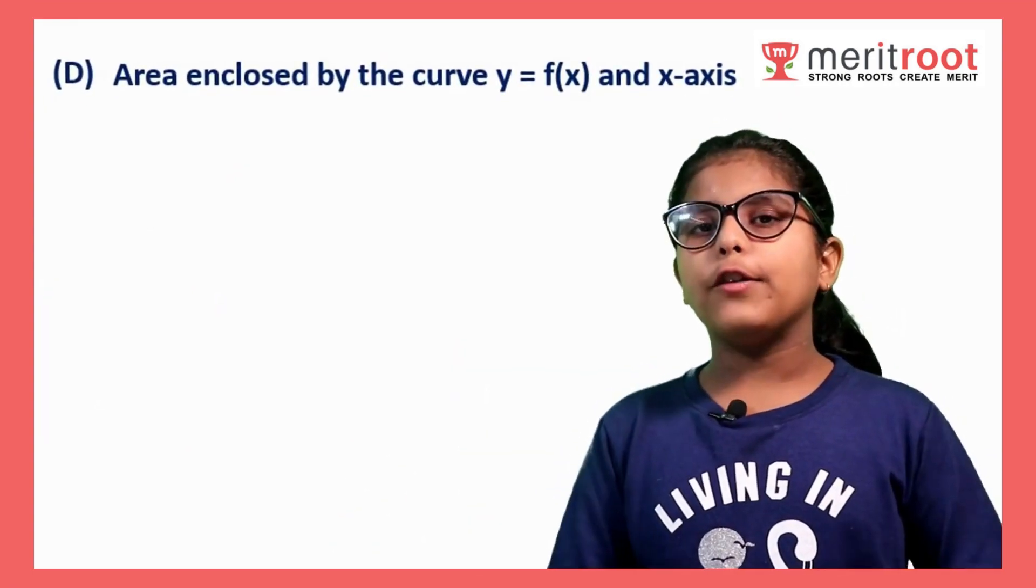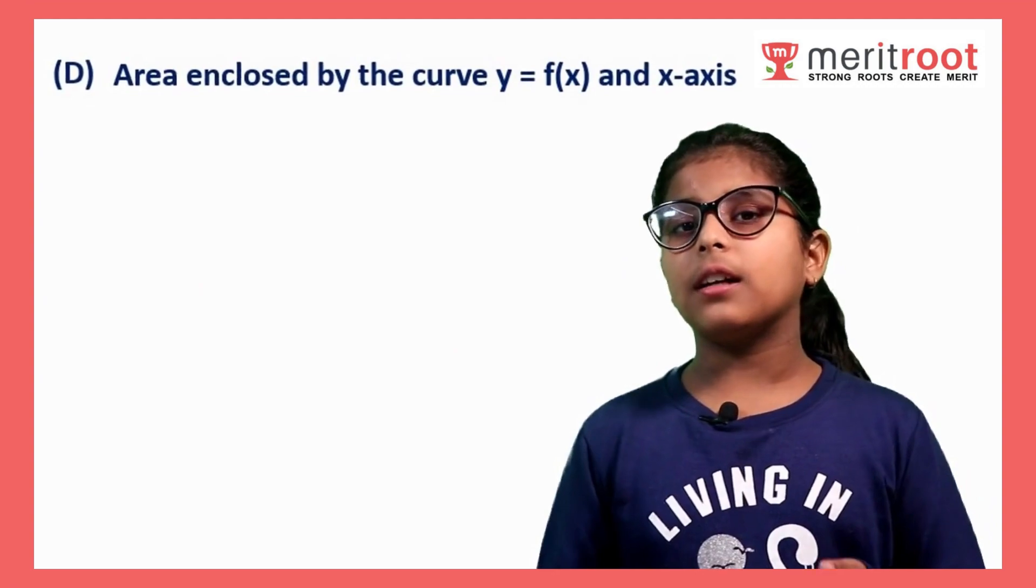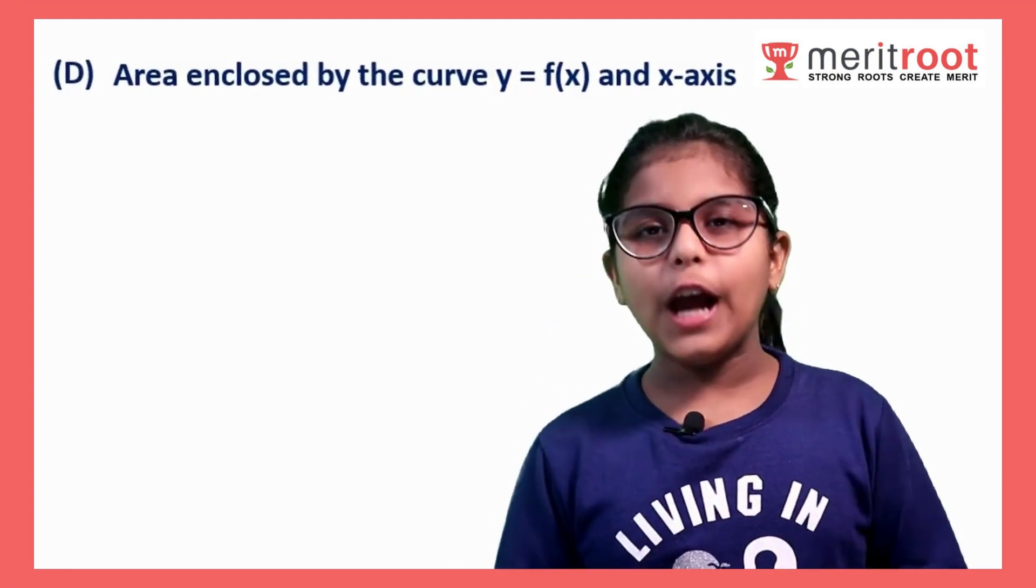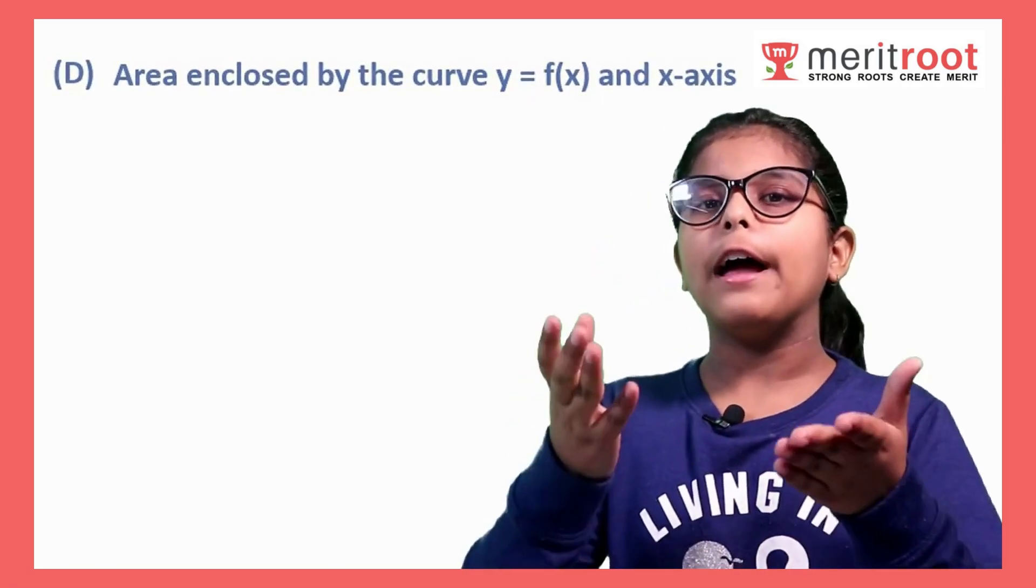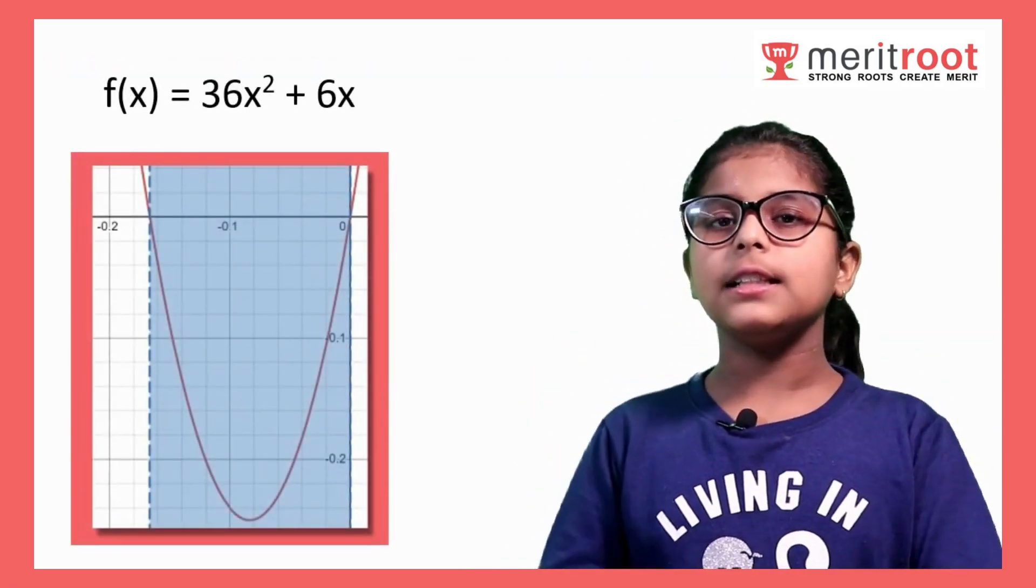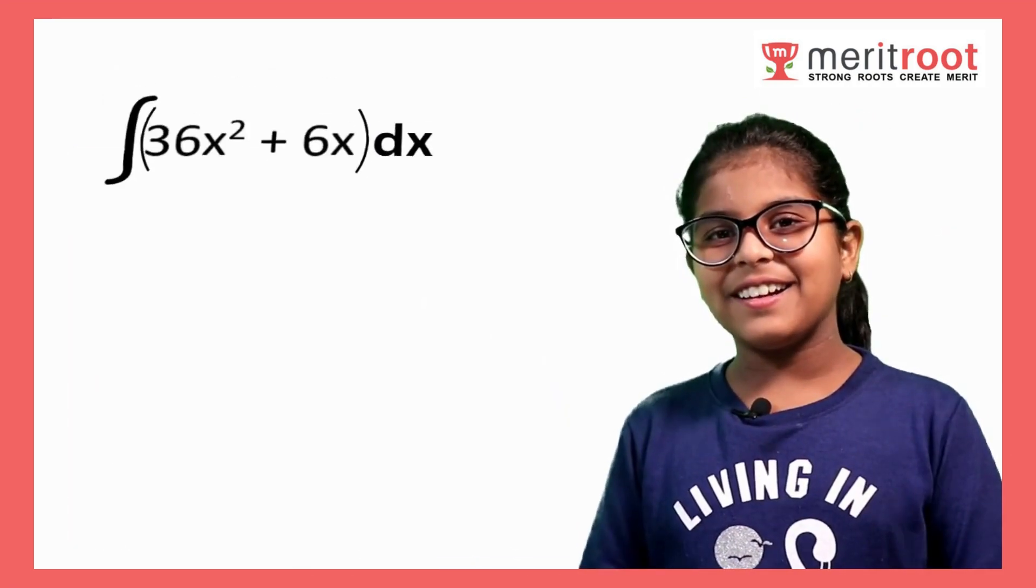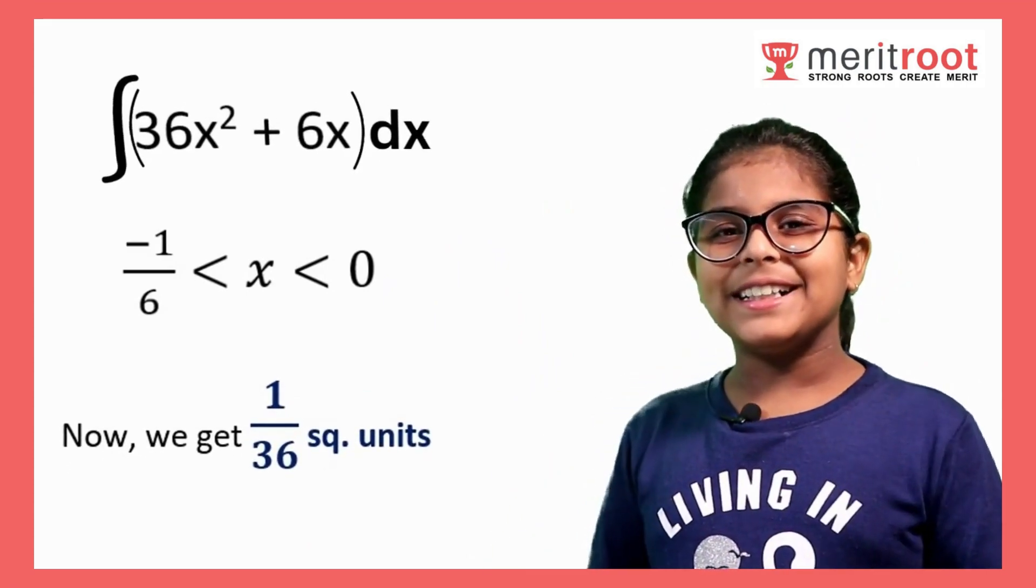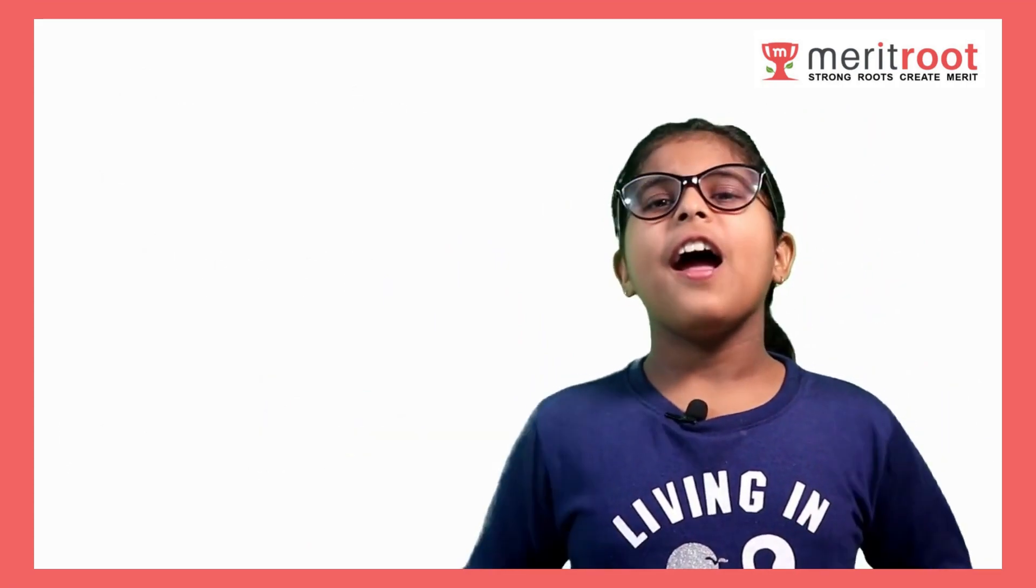As statement D, we have to find area enclosed by the curve f(x) and x-axis. For this, we have to draw the graph of f(x) which is equal to 36x squared plus 6x on the axis. Now we will integrate in the given interval. And we get 1 by 36 square units.